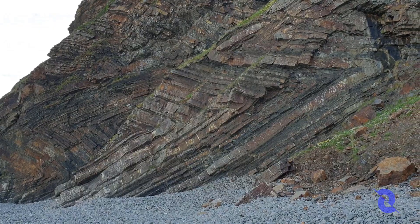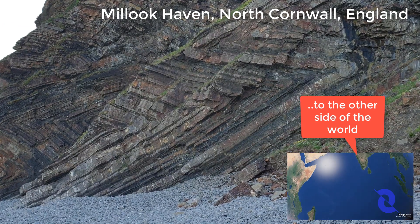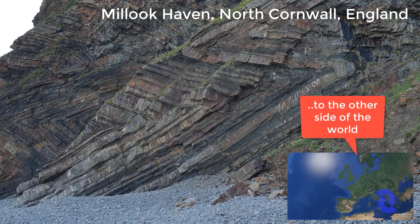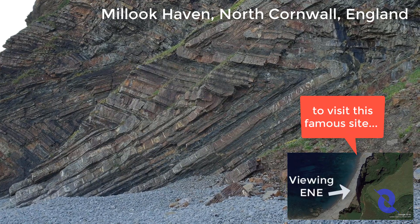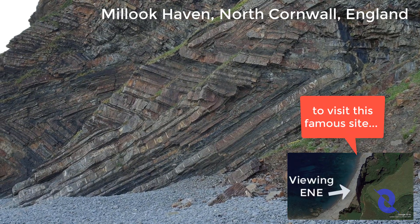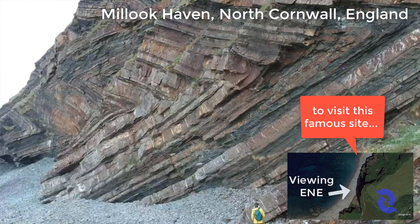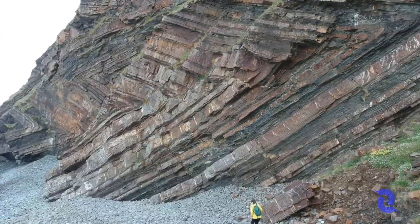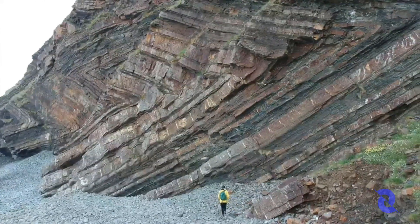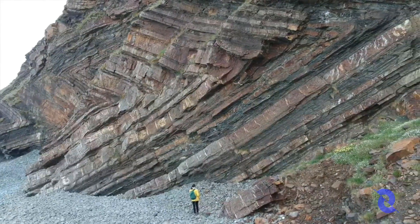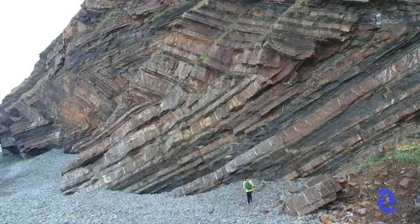You'll notice something interesting once you look at the folds and the veins and where the veins are situated. The veins are situated on the set of limbs that are dipping towards the sea — that's the sea over here. But the limbs that are dipping inland to the right do not have as many veins as the competent beds that are dipping towards the sea.